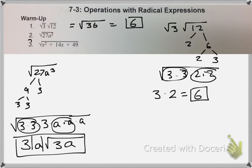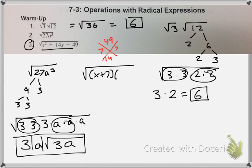And for number 3, you can factor this using magic x. So we get square root of x plus 7 times x plus 7. Your index is 2, so here's my group of 2. So I have x plus 7, but since my index is even, I need absolute value sign around it.